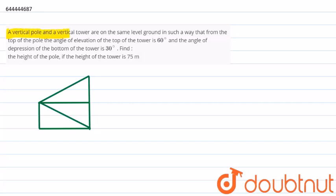A vertical pole and a vertical tower are on the same level ground in such a way that the top of the pole makes an angle of elevation to the top of the tower of 60 degrees, and the angle of depression to the bottom of the tower is 30 degrees. We need to find the height of the pole if the height of the tower is given as 75 meters.